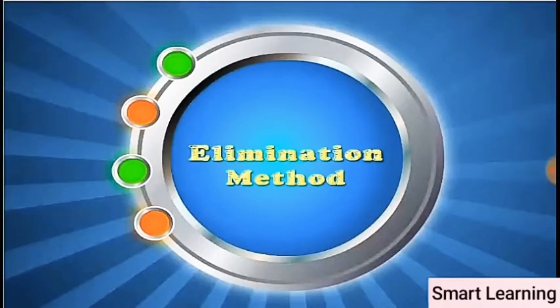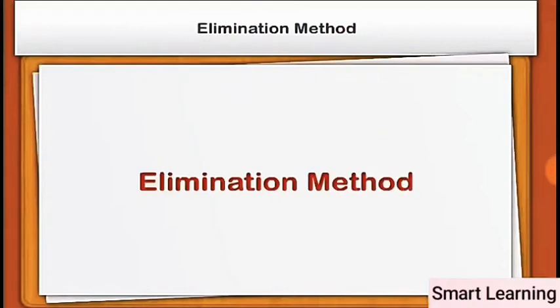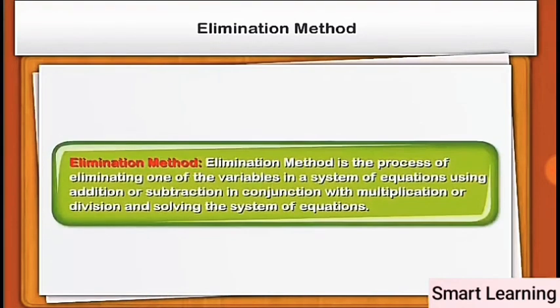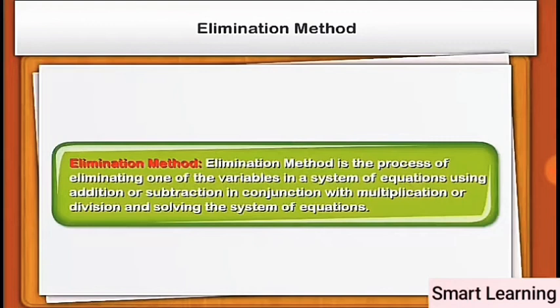Elimination method. Now we will learn the elimination method of solving a pair of linear equations in two variables. Elimination method is the process of eliminating one of the variables in a system of equations using addition or subtraction in conjunction with multiplication or division. This method is sometimes more convenient than the substitution method. Let us see how the elimination method works with an example.